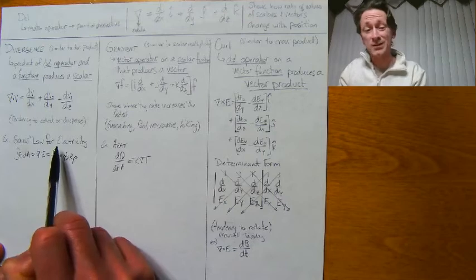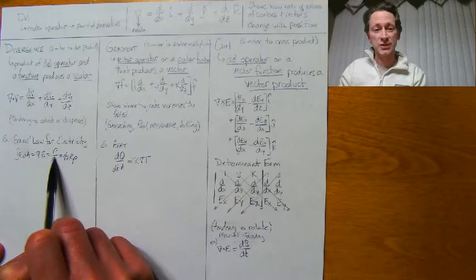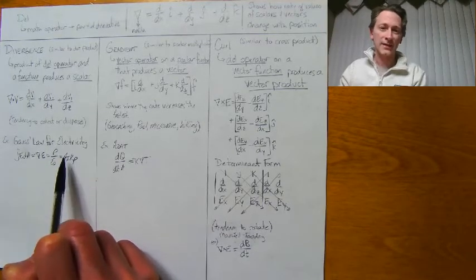An example of this would be Gauss's law for electricity. You have del of the electric field, which gives you the charge density with the constant and ultimately tells you how much charge is inside that defined area.